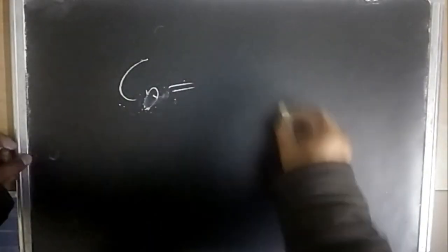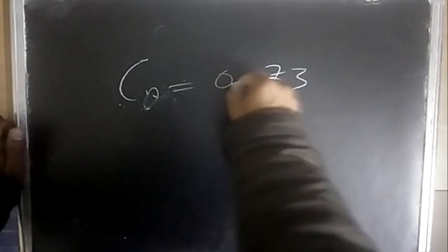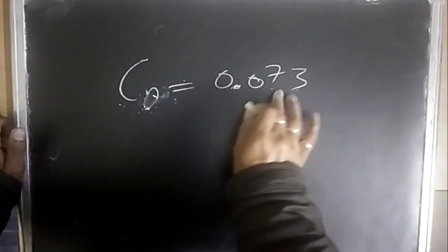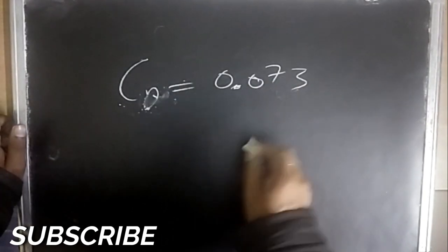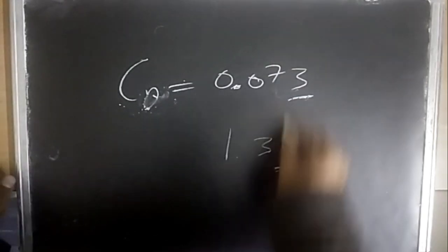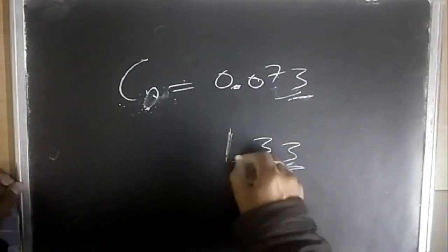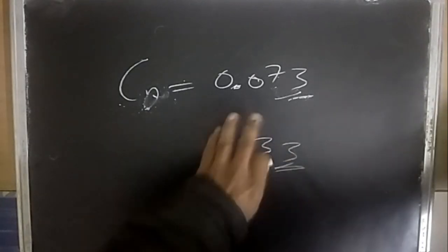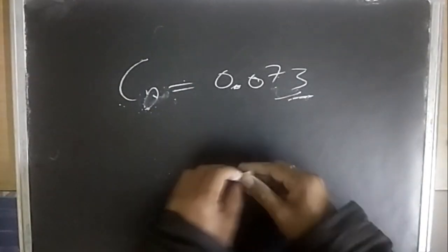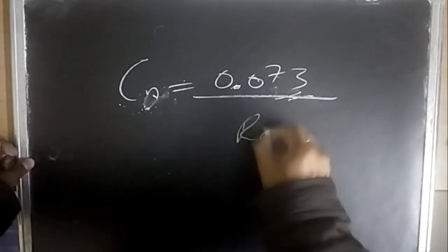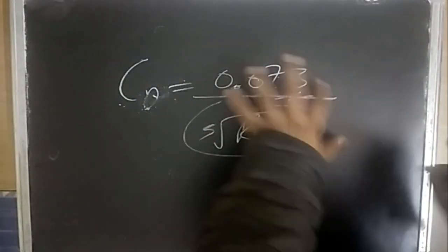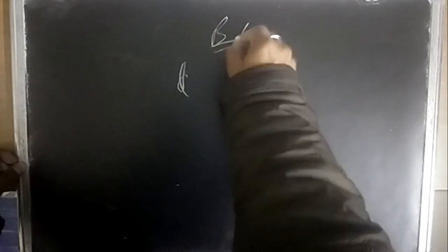For turbulent flat plate drag coefficient: C_D = 0.073 / Re_L^(1/5). To remember: for laminar C_D = 1.33/√Re_L; for turbulent, 1→0, 3→0.073, and the denominator changes from √Re to Re^(1/5). Boundary layer separation occurs when ∂u/∂y < 0, i.e., ∂p/∂x > 0 (adverse pressure gradient).